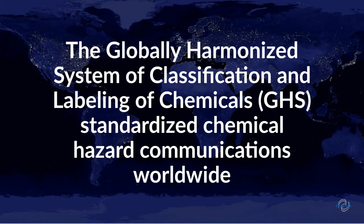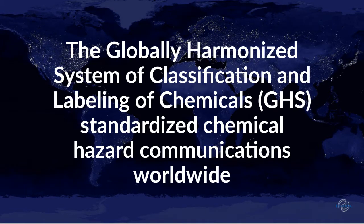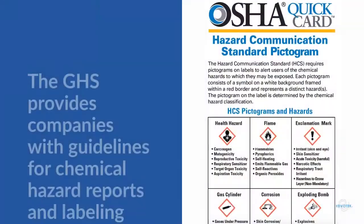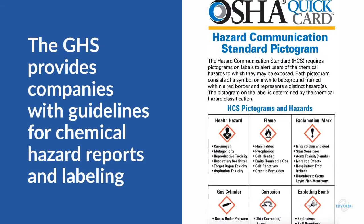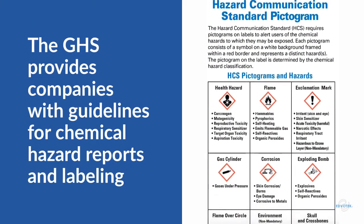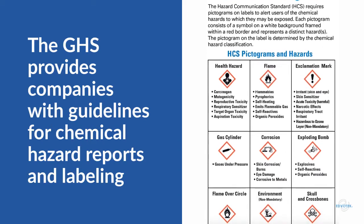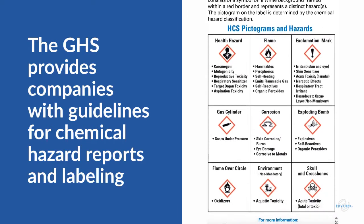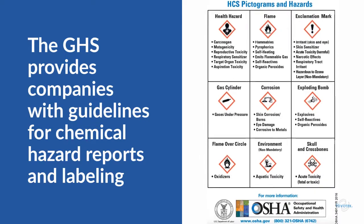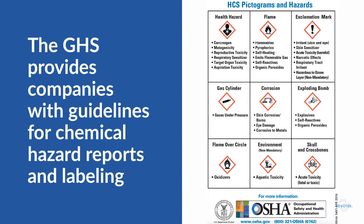This agreement standardized the way that companies around the world communicate information about chemical hazards from their products. The GHS provides guidelines on how companies classify a chemical's physical, environmental, and health hazards. It also defines a system to guide manufacturers on effective communication regarding these chemical hazards and ways to advise users on safe handling.